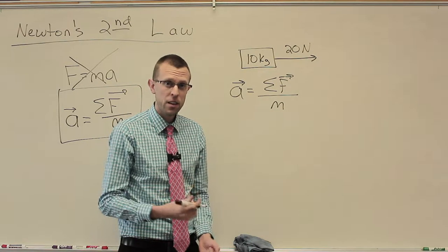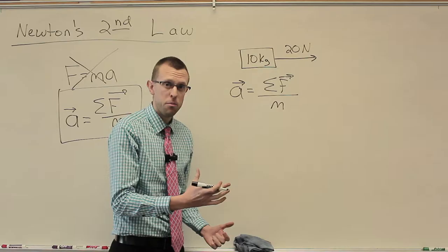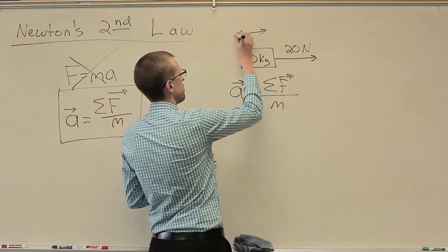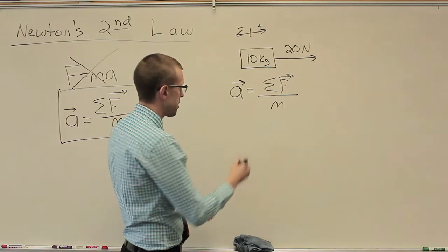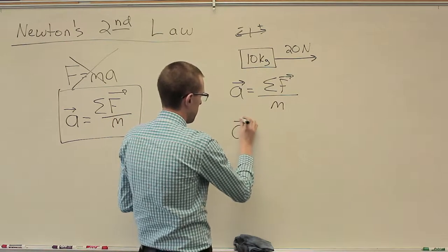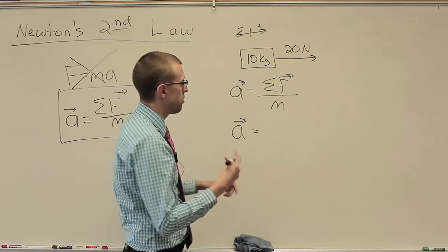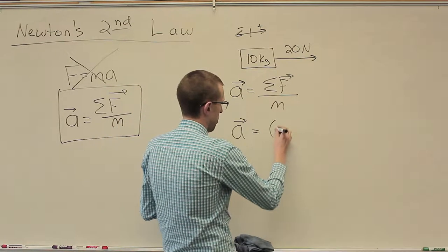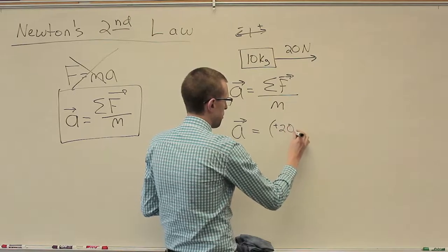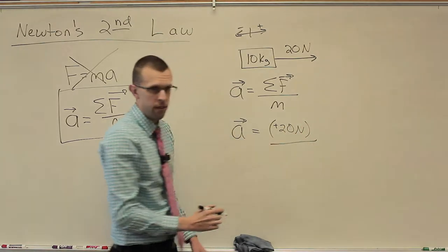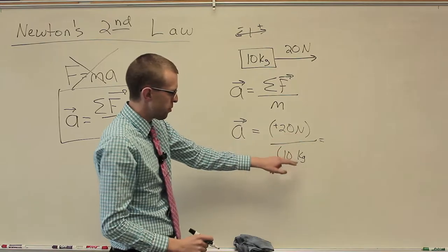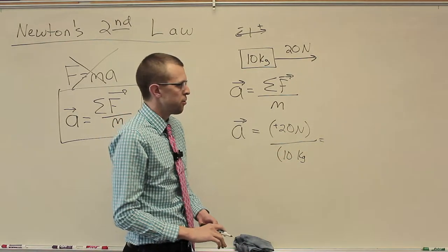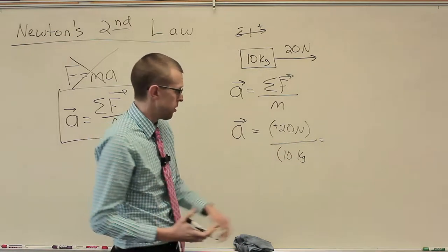So the sigma symbol here just means we need to add all the forces together that are acting on this object. Turns out this time that's pretty easy, we only have one force. But I also am reminded that these forces and accelerations are vectors. I should establish a direction for positive and negative. We'll say positive is to the right and negative is to the left. I'm looking for acceleration, that'll be my unknown. My net force is the total of all the forces, which here is just that one force, 20 Newtons in the positive direction, divided by the mass, which is 10 kilograms.